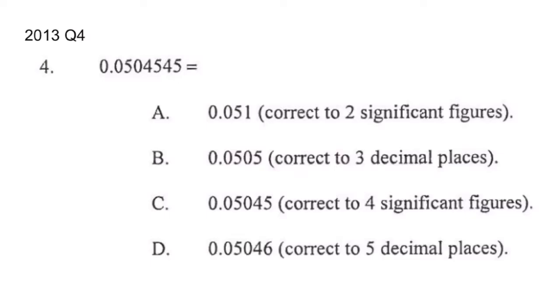Assalamu alaikum everyone and welcome back. Today we are going to do 2013 paper 2 MC question 4, and this is about error and estimation. You're given a number and you have to choose from the choices. The first step is to directly look at the choices to see if you can eliminate any of them.